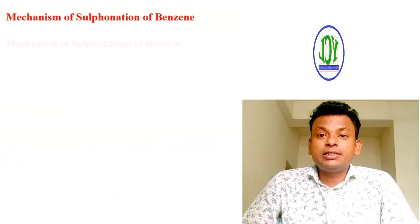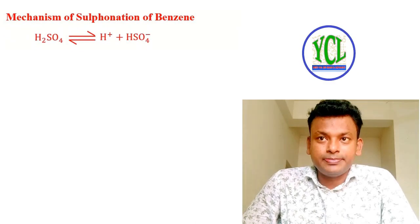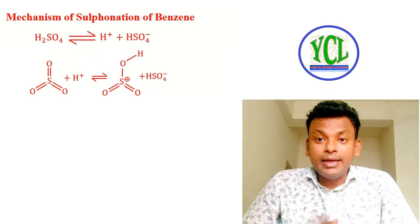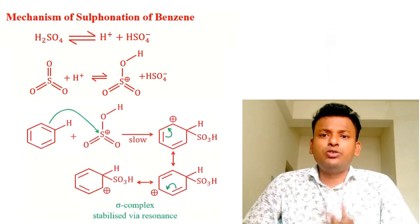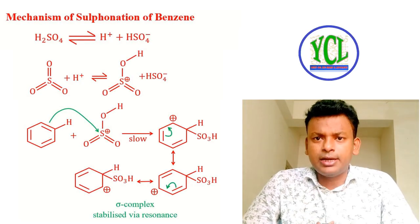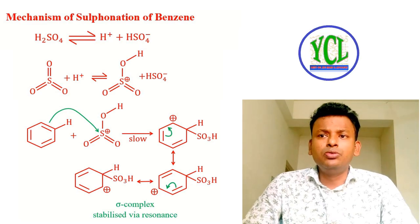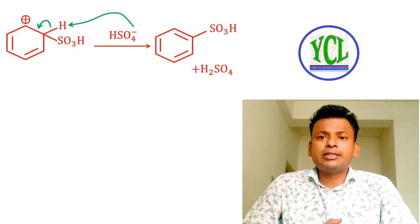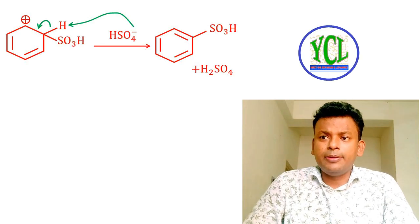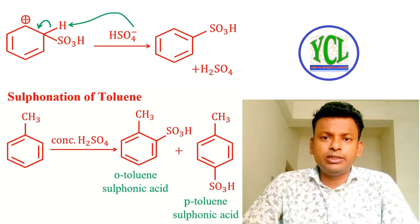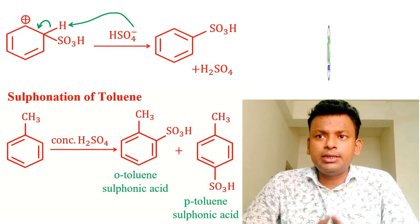Mechanism of sulfonation of benzene: H₂SO₄ gives H⁺ and HSO₄⁻. H⁺ reacts with SO₃ to form SO₃H⁺. SO₃H⁺ reacts with benzene to form a sigma complex (same general mechanism as halogenation and nitration). HSO₄⁻ acts as a base and accepts a proton, forming benzene sulfonic acid. Sulfonation of toluene: toluene gives ortho and para products; with concentrated H₂SO₄, ortho-toluenesulfonic acid and para-toluenesulfonic acid are formed. Sulfonation of phenol: phenol with concentrated H₂SO₄ at 100°C forms para-phenolsulfonic acid; at lower temperature (20°C), ortho-phenolsulfonic acid is formed.